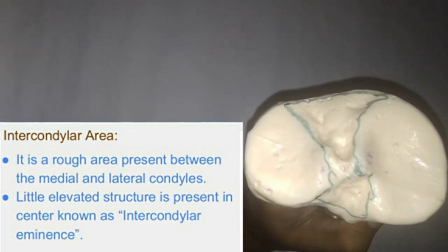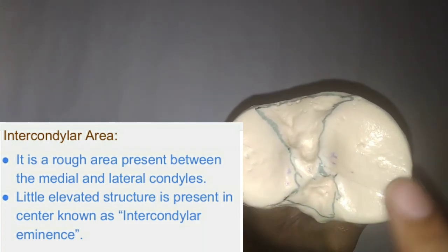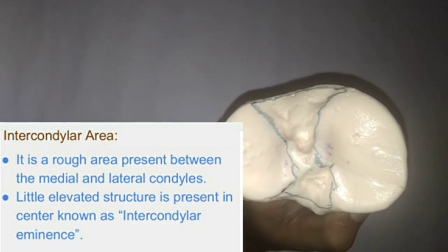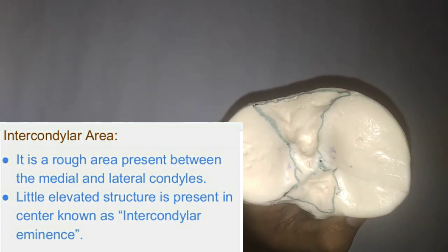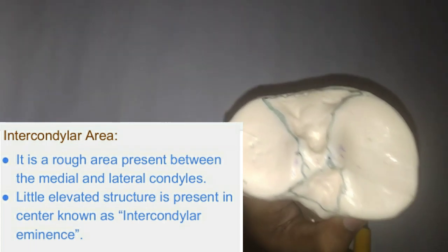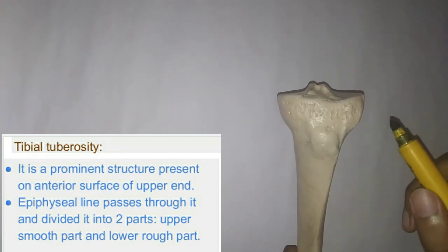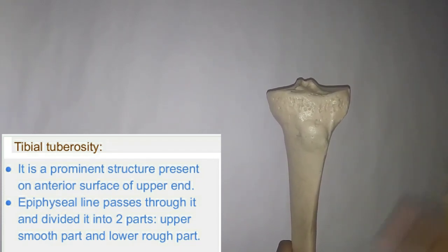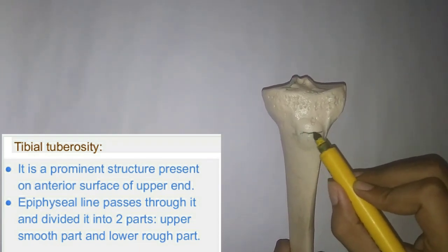The intercondylar area is present between both articulating structures. The most prominent part on the medial condyle is known as the medial tubercle, and the most prominent part on the lateral condyle is known as the lateral tubercle. The most prominent structure present between these tubercles is known as the intercondylar eminence. Next, the tibial tuberosity is present on the anterior surface of the upper end and is divided into two parts by the epiphyseal line: the upper smooth part and the lower rough part.